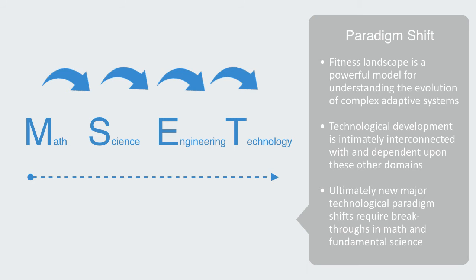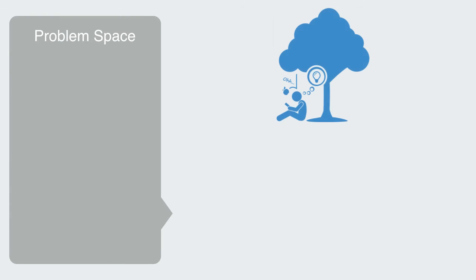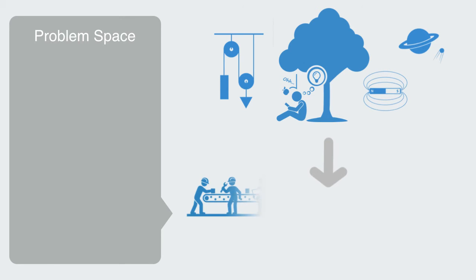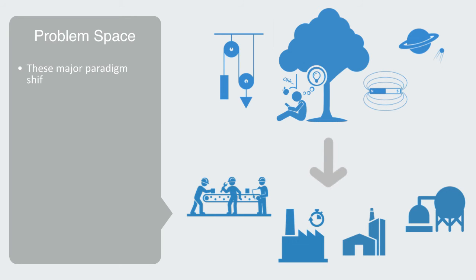There may be many non-linear cross-pollinations within the domain of technology and engineering that drive innovation. But ultimately, new major technological paradigm shifts require breakthroughs in math and fundamental science. This is most evident when we look at how the breakthrough of the modern scientific revolution gave birth to a new set of engineering methods and the industrial revolution. These major paradigm shifts result in the whole landscape changing. Not only is the set of solutions redefined, that is to say the set of engineering methods and technologies, but also the actual problem space itself may be redefined.